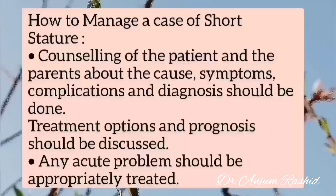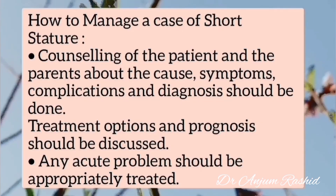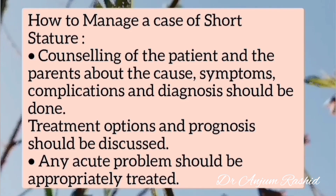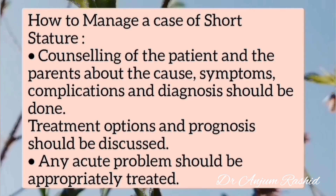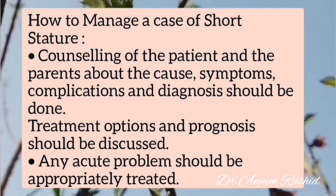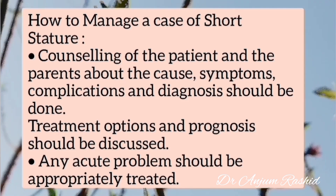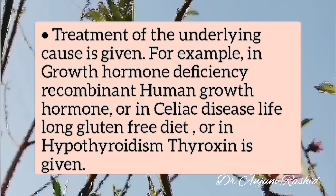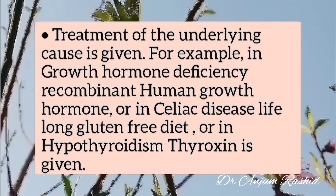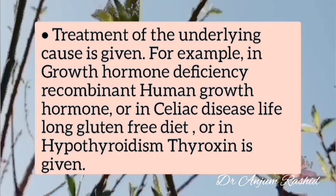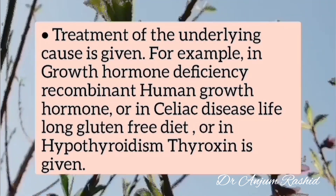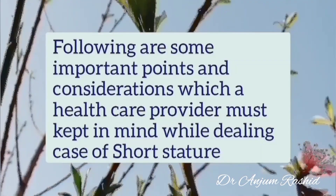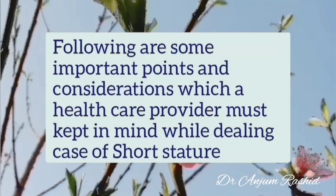How to manage a case of short stature: counseling of the patient and the parents about the cause, symptoms, complications, and diagnosis should be done; treatment options and prognosis should be discussed; any acute problem should be appropriately treated. Treatment of the underlying cause is given — for example, in growth hormone deficiency, recombinant human growth hormone; in celiac disease, a lifelong gluten-free diet; and in hypothyroidism, thyroxine is given.